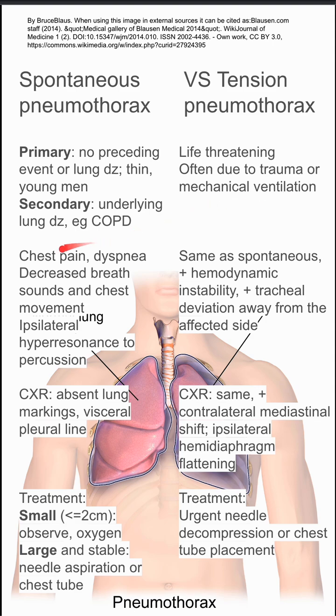Signs and symptoms of spontaneous pneumothorax include chest pain, dyspnea, decreased breath sounds, decreased chest movement, and ipsilateral hyper-resonance to percussion. Tension pneumothorax has the same symptoms, plus potential hemodynamic instability and tracheal deviation away from the affected side.